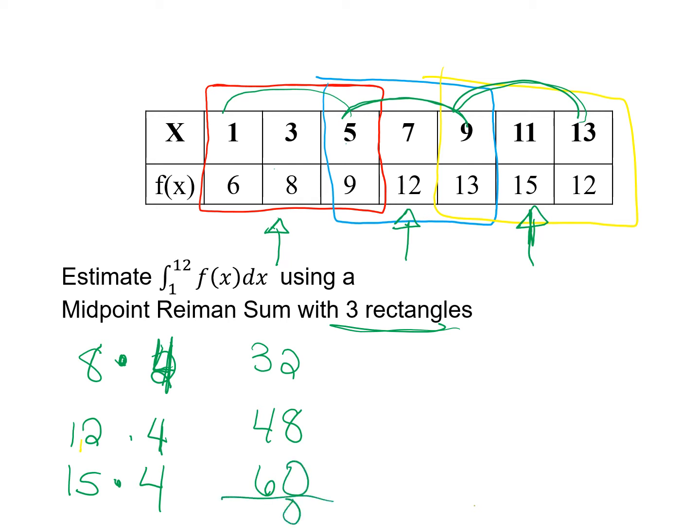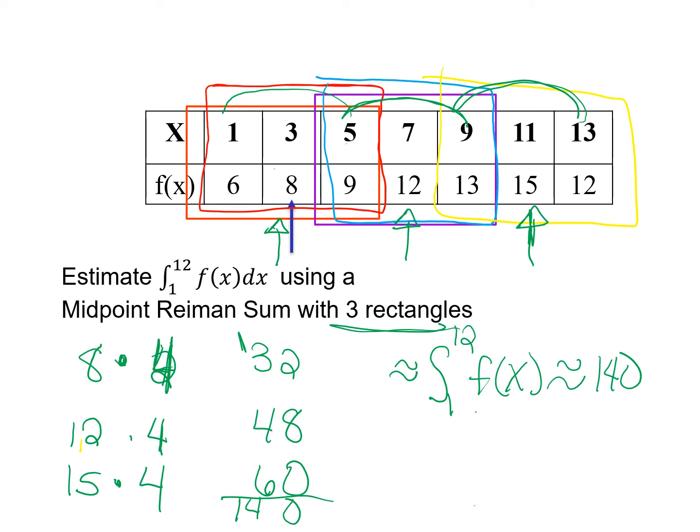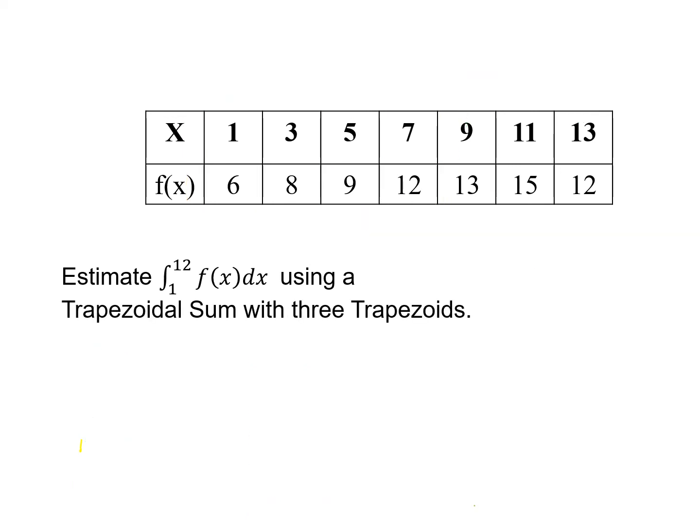So that would give me 32, 48, and 60. Again, if I add these wrong, just go with it. So the approximate integral from 1 to 12 of f of x is approximately 140. Okay? So that's how we would do a midpoint. Oh, I had put the little rectangles there. I knew I had some of that there.